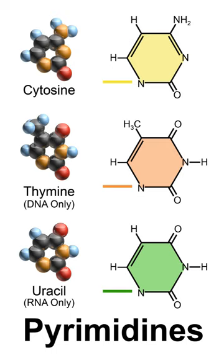The nomenclature of pyrimidines is straightforward. However, like other heterocyclics, tautomeric hydroxyl groups yield complications since they exist primarily in the cyclic amide form. For example, 2-hydroxypyrimidine is more properly named 2-pyrimidinone. A partial list of trivial names of various pyrimidines exists.